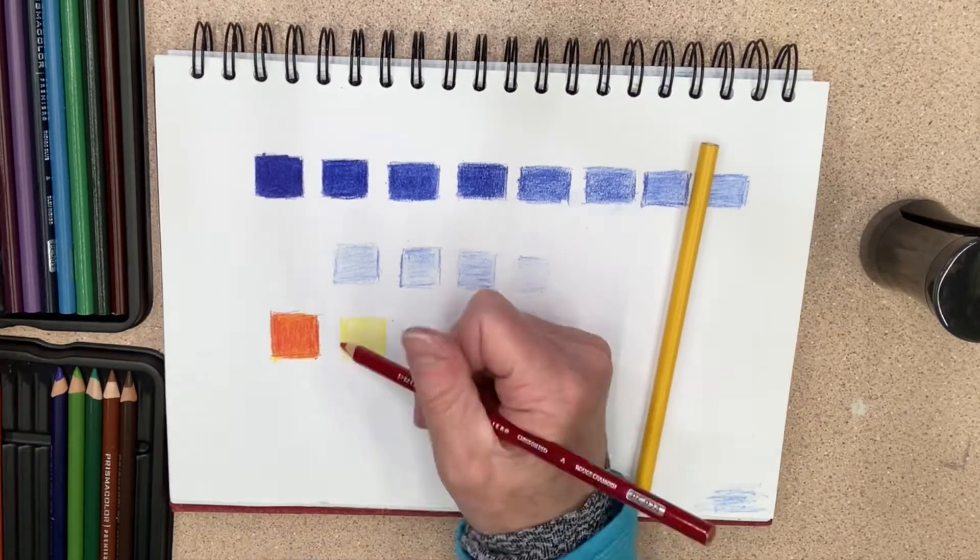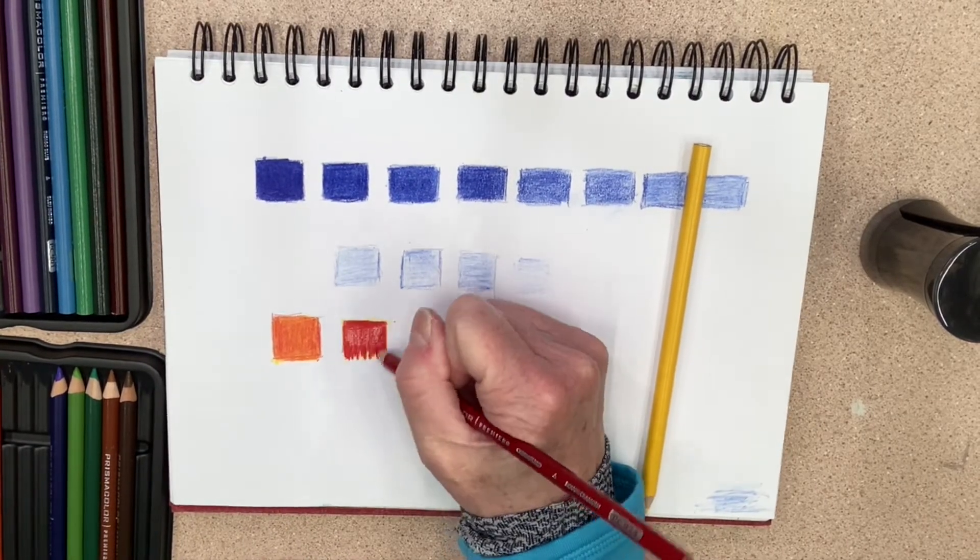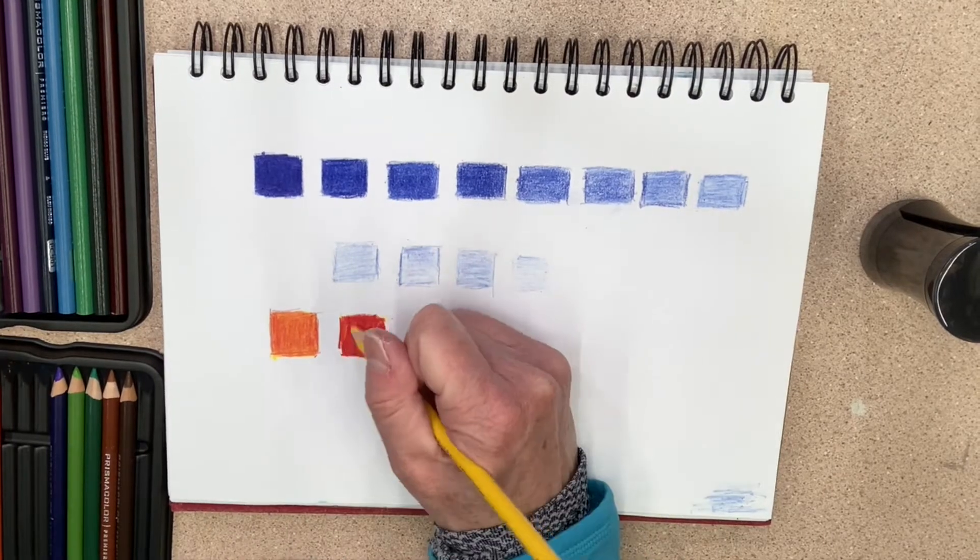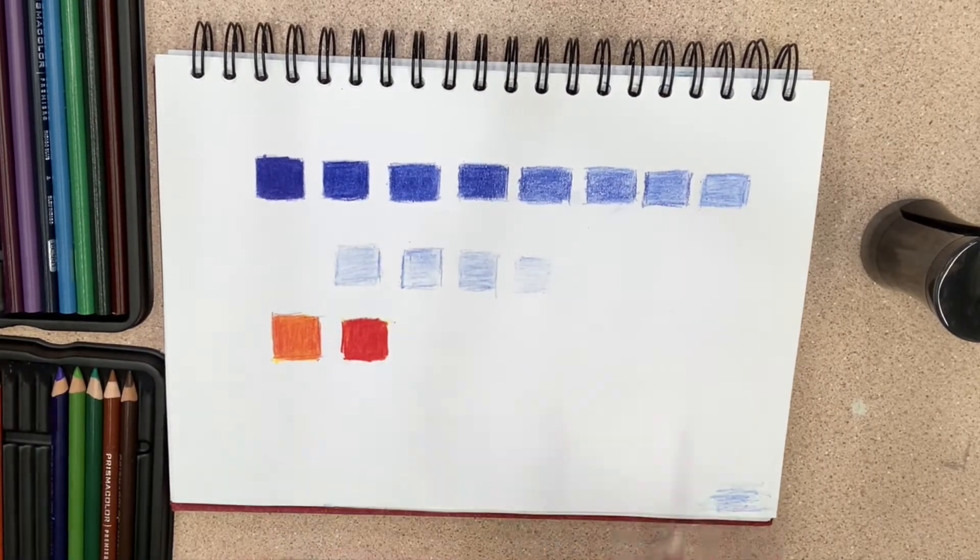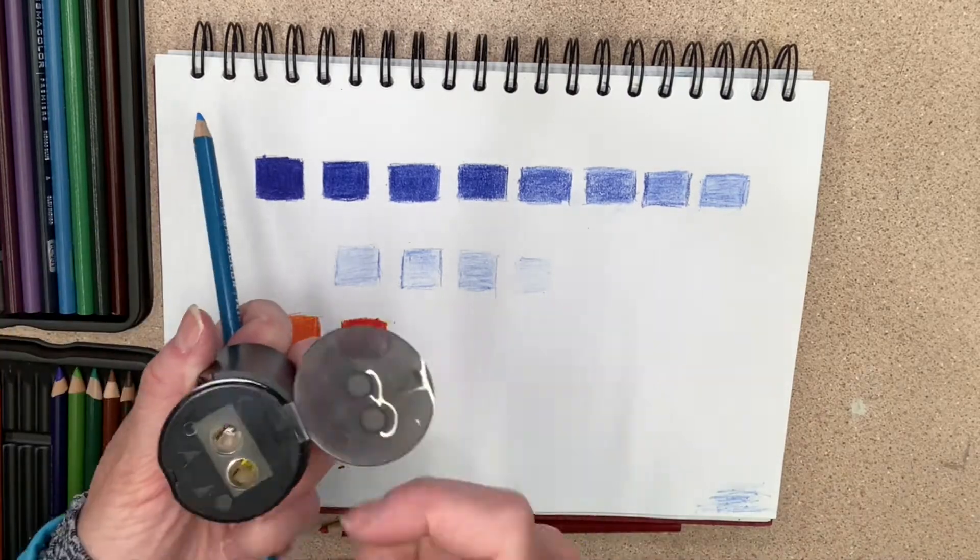Now I'm going to use the canary yellow first and then put the crimson red on top, and you can see the dramatic difference between the two just by switching out the colors.